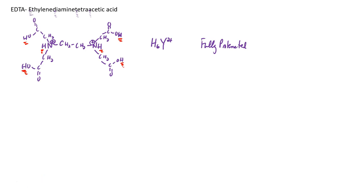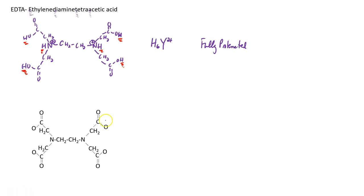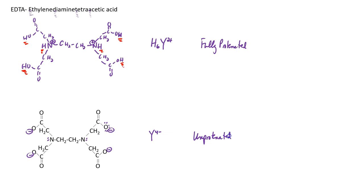This fully protonated form cannot bind metals if all of the binding sites are protonated. We are therefore interested in the unprotonated form. Now all of these oxygen atoms would be surrounded by an octet — the proton would be gone — and therefore each oxygen atom here would have a negative charge. Notice that we're back to nitrogen having three bonds, so you would have a lone pair. This unprotonated form of EDTA we would call Y⁴⁻, and it's the form that binds metals.